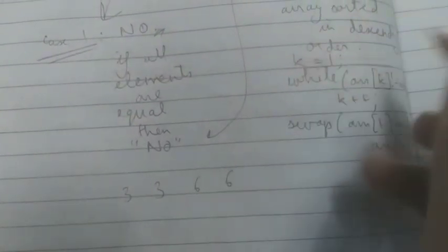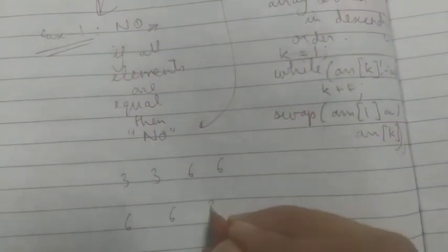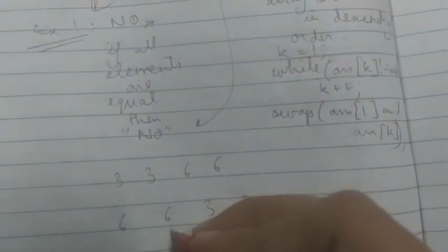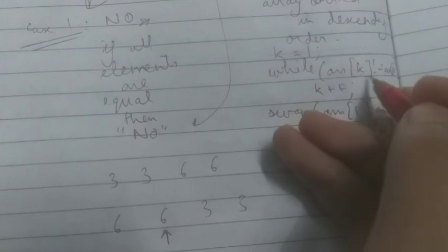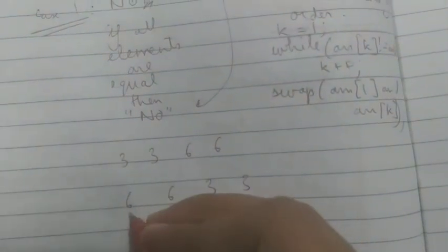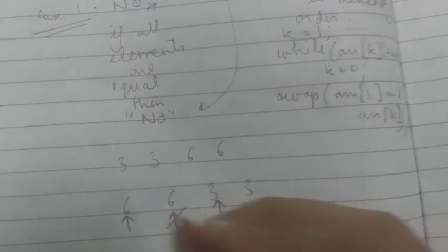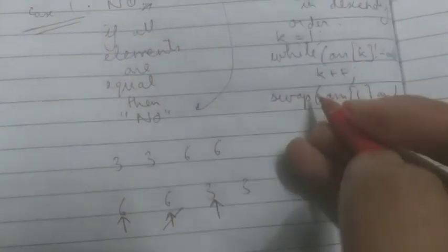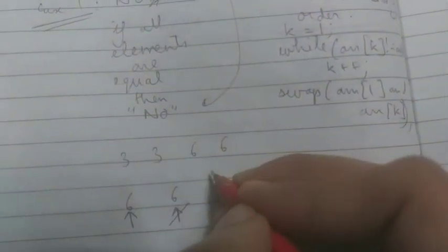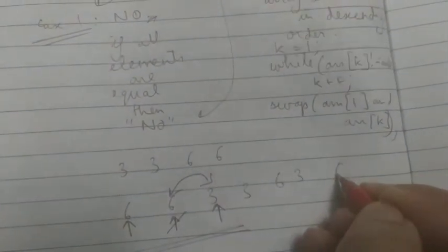Set k equal to one. While arr[k] is not equal to arr[0], increment k. Then swap arr[1] and arr[k]. For three three six six: sorted descending becomes six six three three. k starts at one — arr[1] equals arr[0] so we increment k. Now arr[k] is three which is not equal to six, so we swap arr[1] and arr[k], giving six three six three — a valid arrangement.